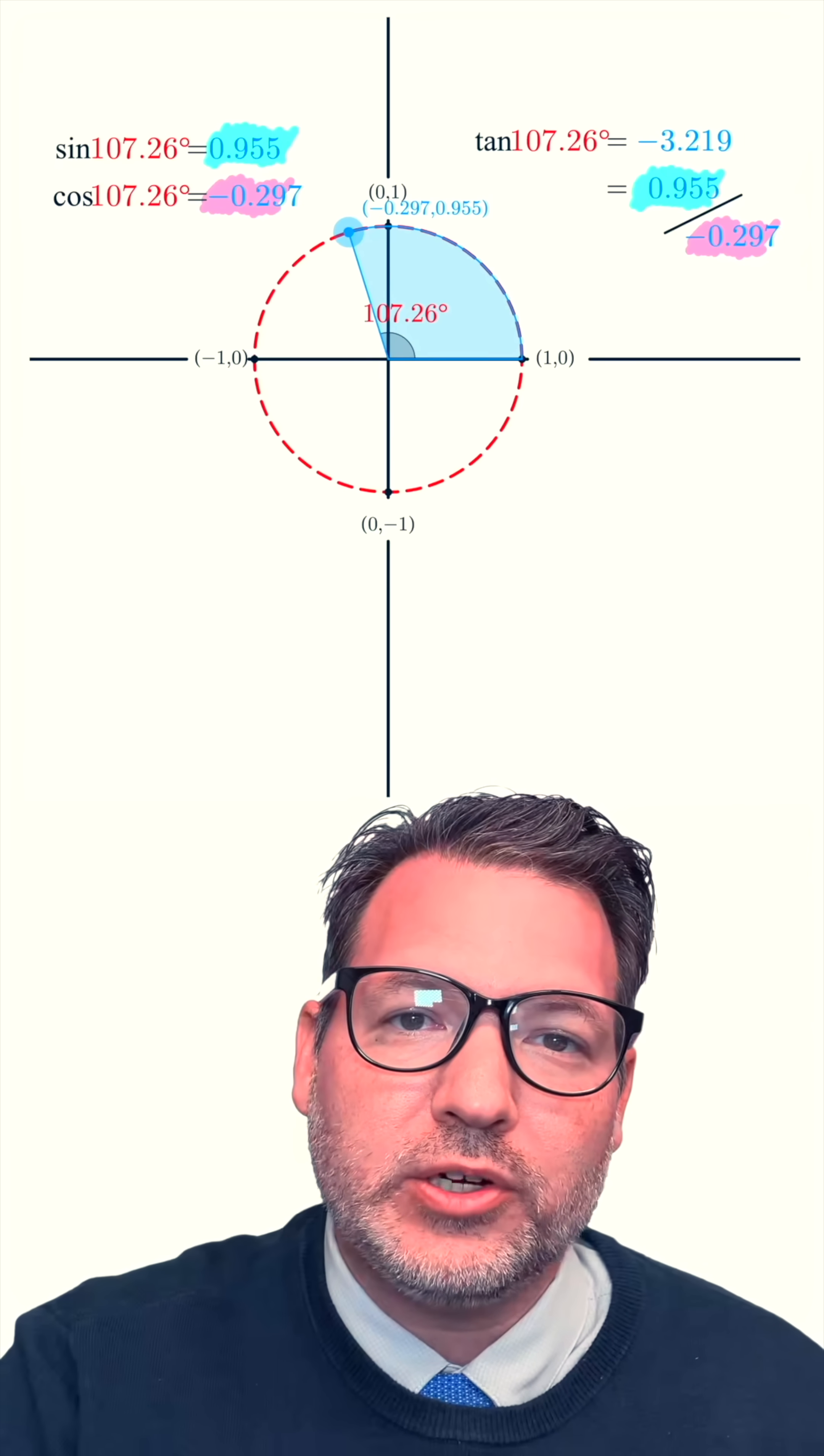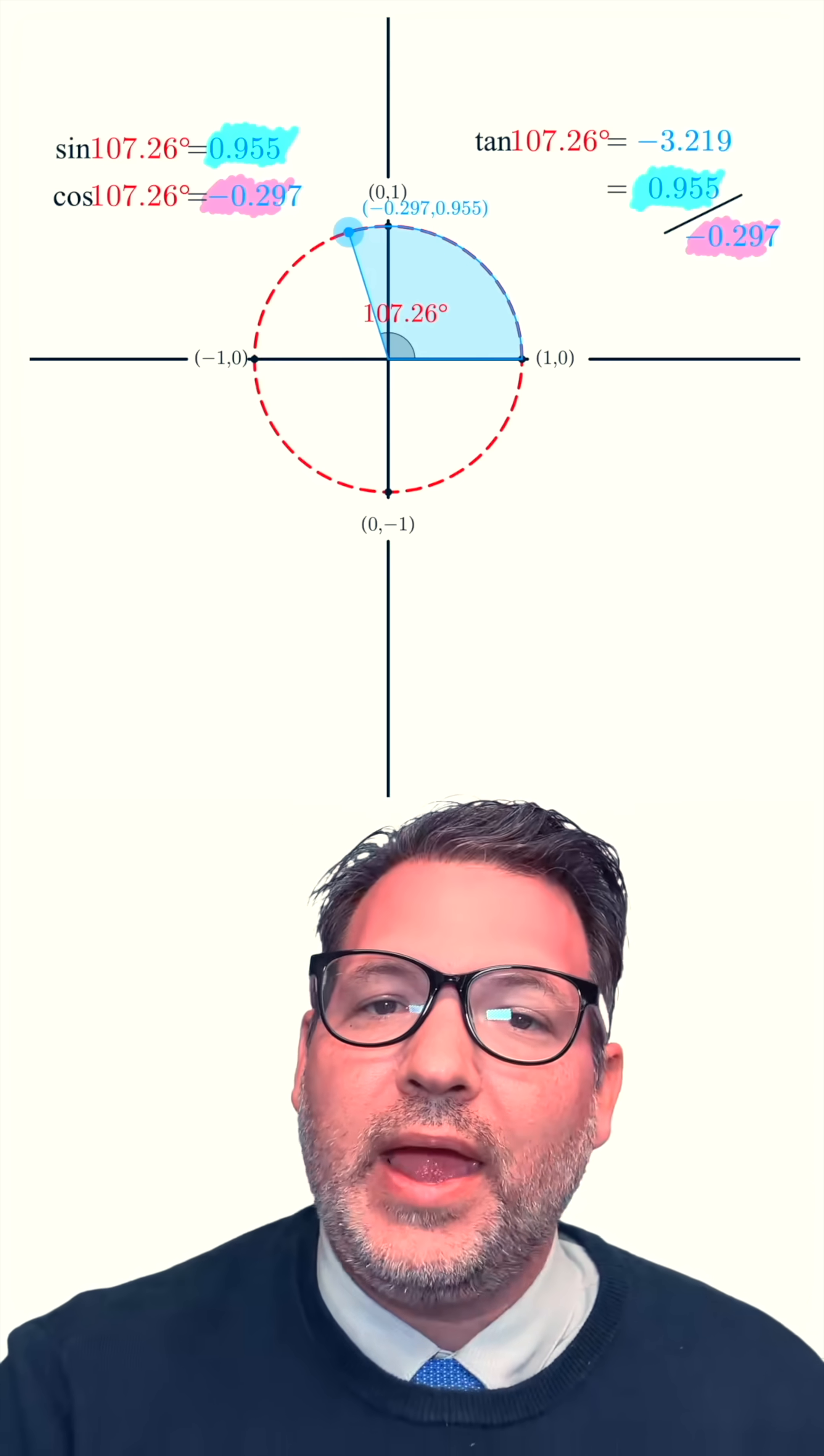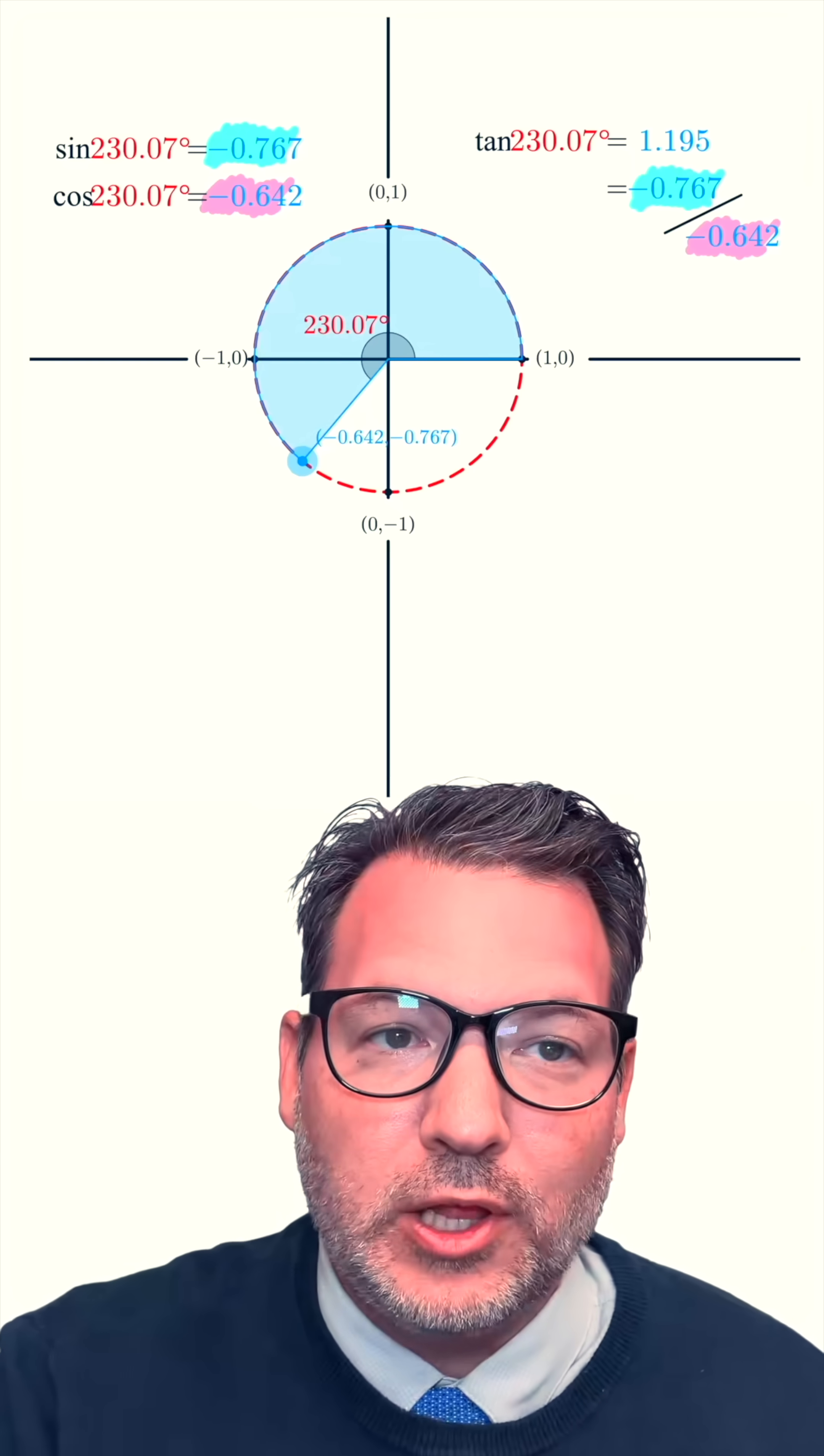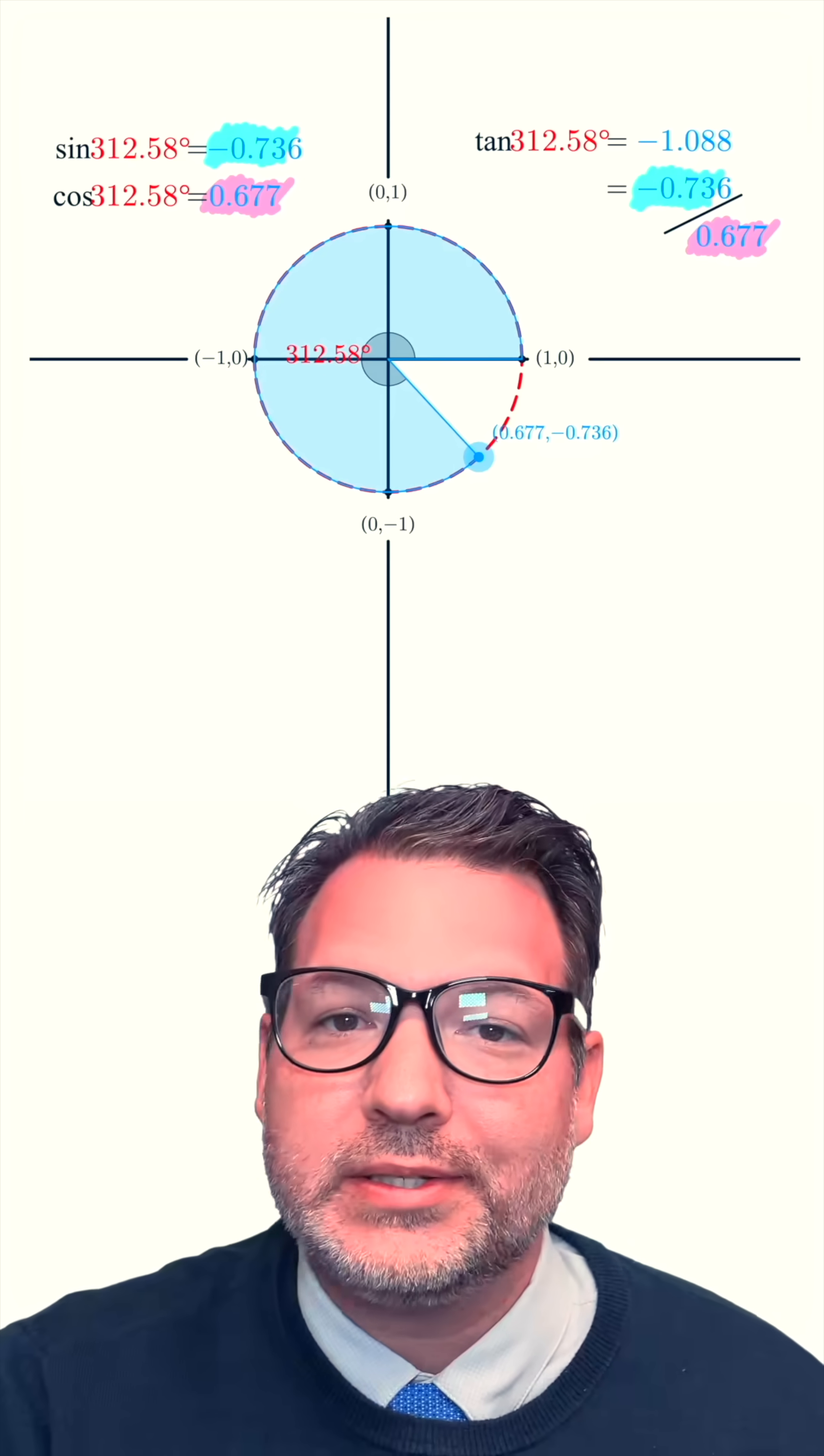But then when we get over here into quadrant two, the slope of that line is now negative. That is, it's moving down as we go to the right. And so what we see is that for angle values in quadrant two, tangent is negative. As we move back into quadrant three, the angle now slopes upward once more. And so those positive slopes correspond to positive tangent values. And then finally, all the way over in quadrant four, tangent's value once again is negative.